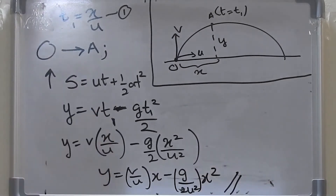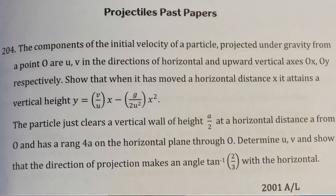So that's the end of the first part. Now let's move on to the second part. The second part states that the particle just clears a vertical wall of height A over 2 at a horizontal distance A from O and has a range 4A on the horizontal plane through O. Determine u and v, and show that the direction of projection makes an angle tan inverse 2 over 3 with the horizontal.